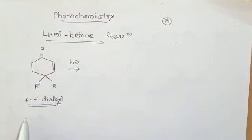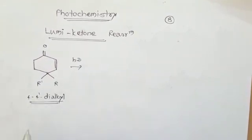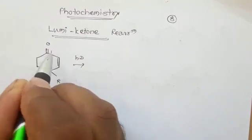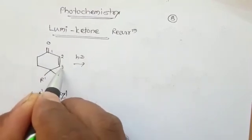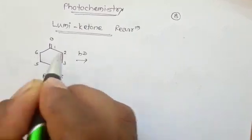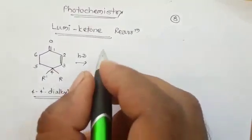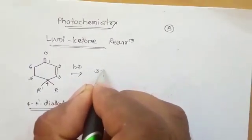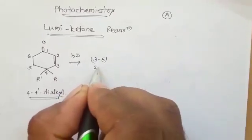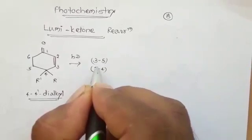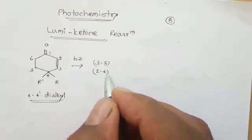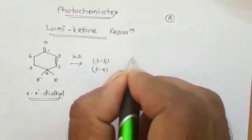We will now see the mechanism of this reaction. The important part is the numbering system: 1, 2, 3, 4, 5, 6. The rule is: first we make the bond between positions 3 and 5, and then between 2 and 4. This is the completely opposite format compared to the di-pi-methane rearrangement reaction.